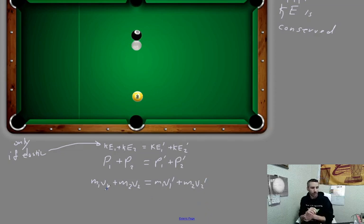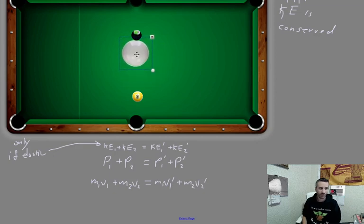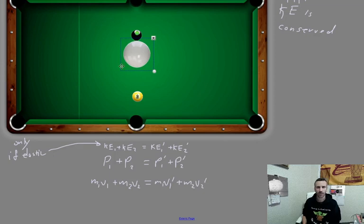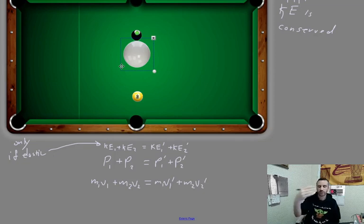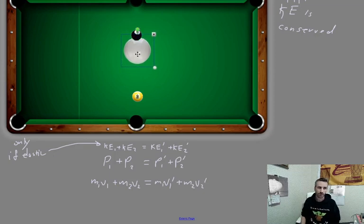If you have two objects of different masses, say the cue ball was bigger, then the cue ball no longer comes to a stop. Even in a head-on collision it will not stop. Think about what will happen — will it continue or will it bounce backwards? A large object hitting a small object in an elastic collision will actually continue forward. It has so much mass it continues forward. But a small object hitting a larger one would bounce backwards.